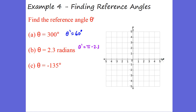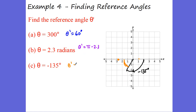Now we have negative 135 degrees. Starting at negative 90, then negative 180 — we go too far. So negative 135 degrees lands us right about here. Our reference angle is this angle. We have 180 minus 135, which gives us a reference angle of 45 degrees. Find that reference angle — sketch them out.